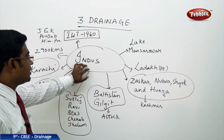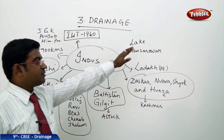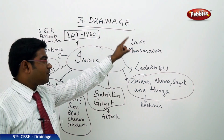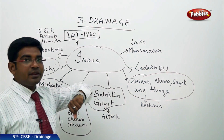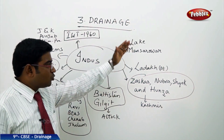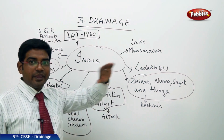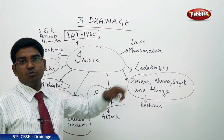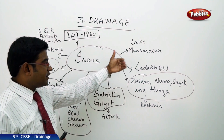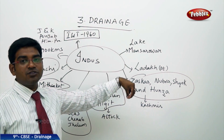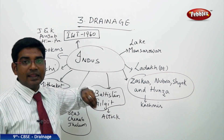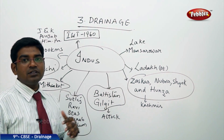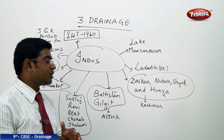River Indus originates in Tibet at Lake Mansarovar. After originating from Mansarovar, it moves into the Indian land in the Ladakh district, that is in Jammu and Kashmir. After entering into India, various other tributaries of the Indus river also join it in the Kashmir region.